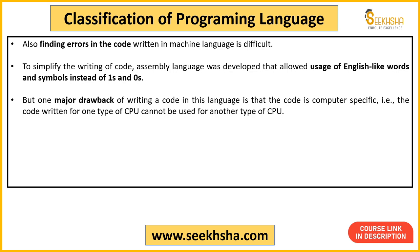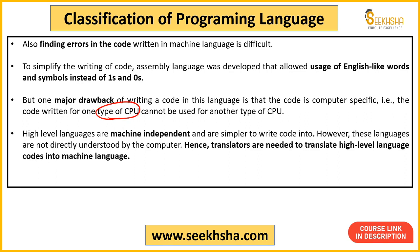High-level language has a major drawback: it cannot be understood directly by the computer. You need a translator to convert the high-level language into machine language. Examples of high-level languages include C++, Java, and Python.